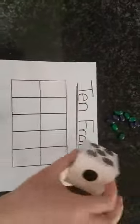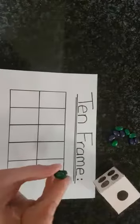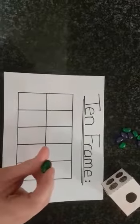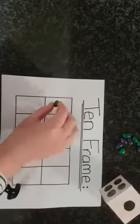Now let's roll it again and see what number it lands on. Let's try again. One again. Okay! So we're going to take how many beans? Very good! Only one.